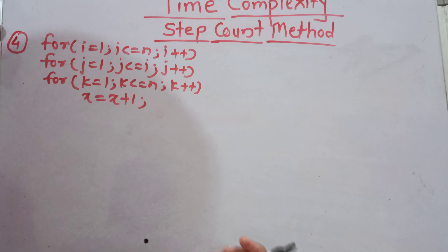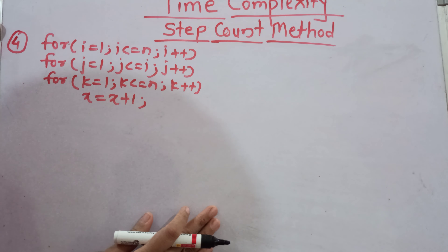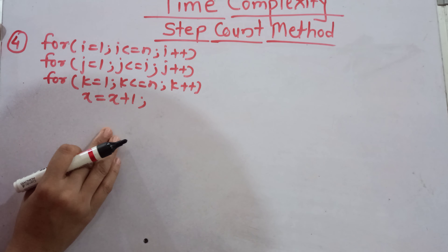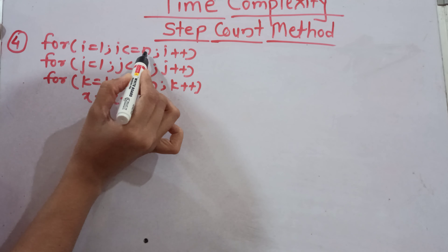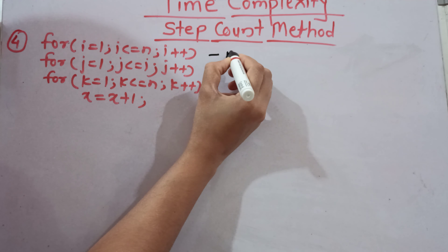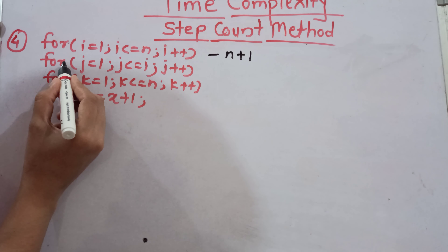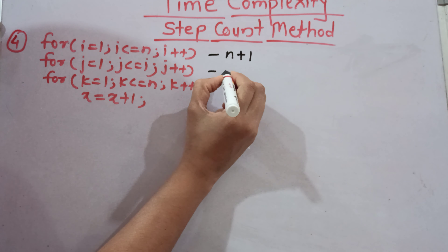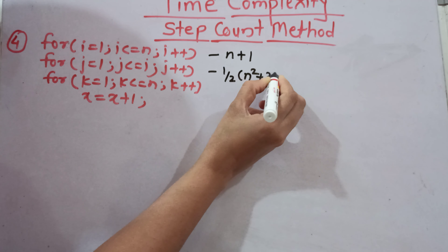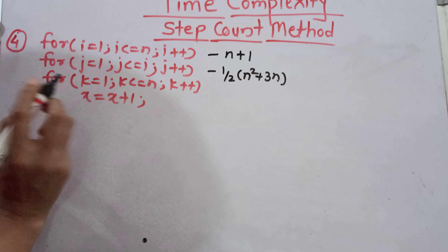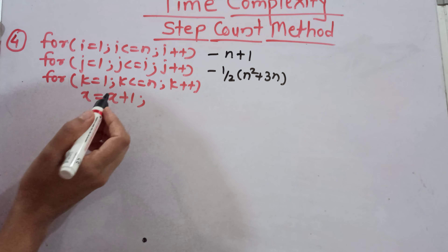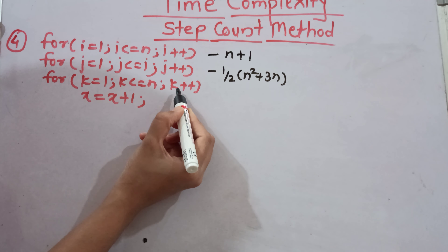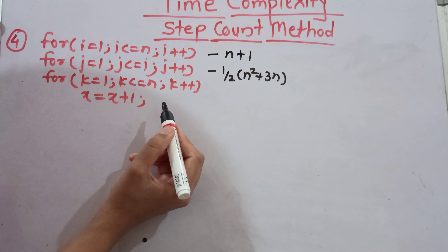Now we will see one more example for better understanding of the step count method. This example is very similar to the previous one — only one more for loop is added. The first for loop, for i is equal to 1, i is less than or equal to n, i plus plus, has step count n plus 1. The second for loop, for j is equal to 1, j is less than or equal to i, j plus plus, has frequency count one-half times (n squared plus 3n) as we just calculated. For the third for loop, k is equal to 1, k is less than or equal to n, k plus plus — although it appears to execute n plus 1 times, that is not quite correct here.